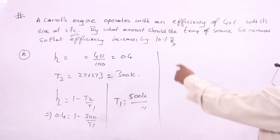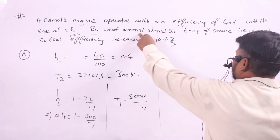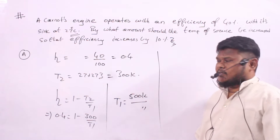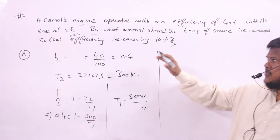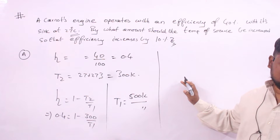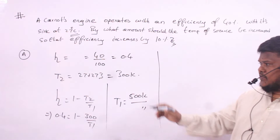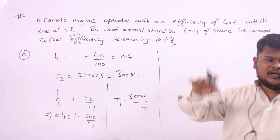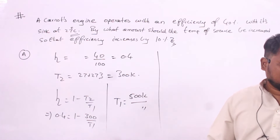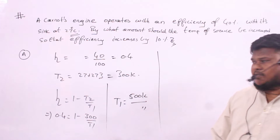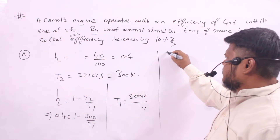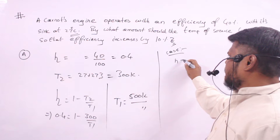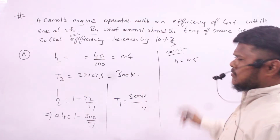Now the question asks: by what amount should the temperature of the source be increased so that efficiency increases by 10%? Previously the efficiency was 40%. If it increases by 10%, the total efficiency becomes 50%, which is 0.5.